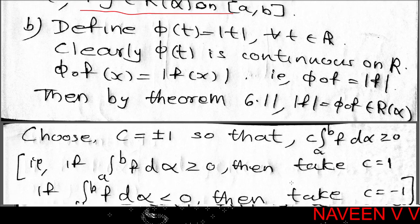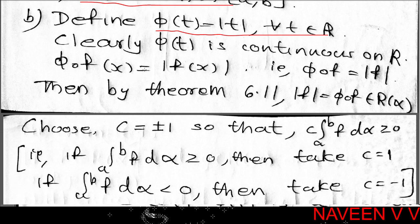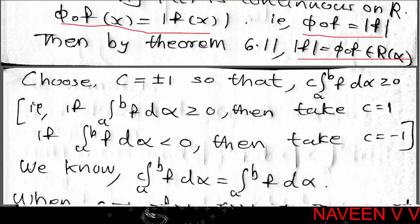For the second part: if f belongs to R(α), then |f| belongs to R(α) on closed interval [a,b]. Define φ(t) = |t| for all t belonging to ℝ. This function is continuous on the real line. The composite φ∘f(x) = |f(x)|. By Theorem 6.11, φ∘f belongs to R(α), so |f| belongs to R(α) on [a,b].